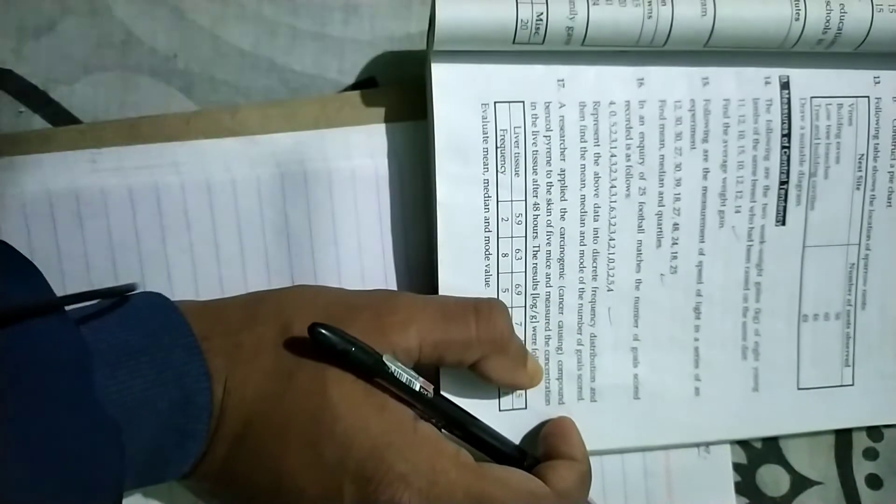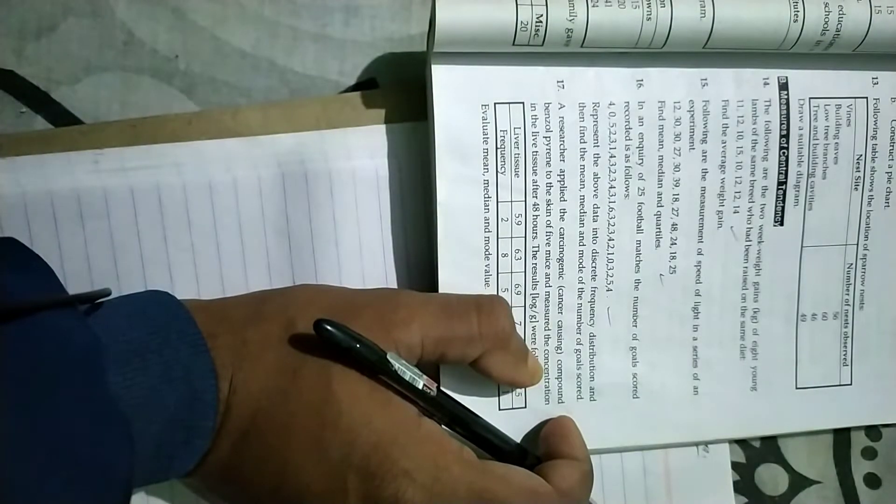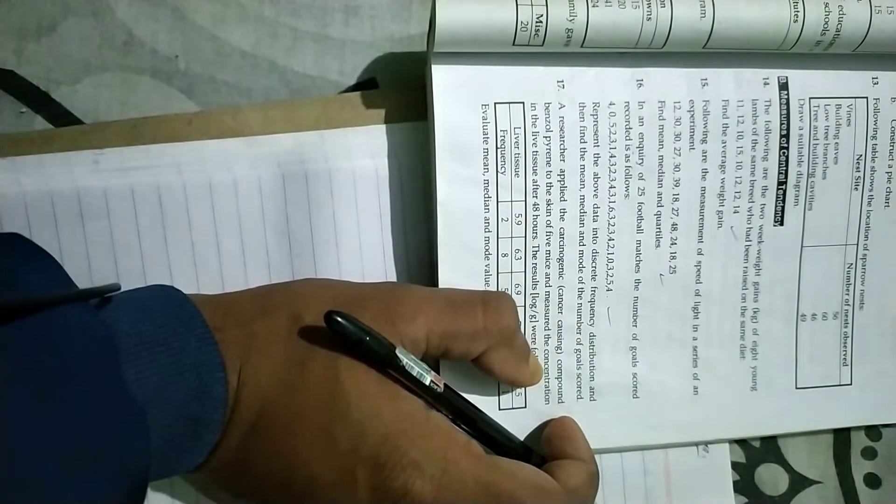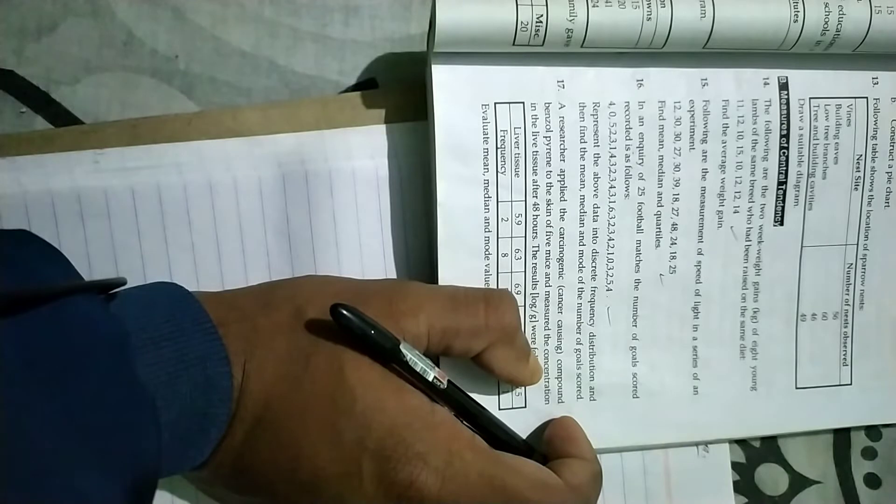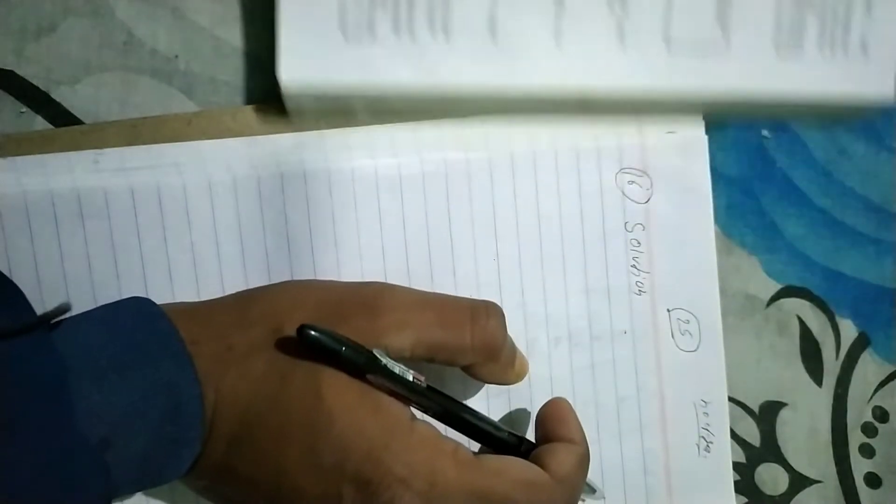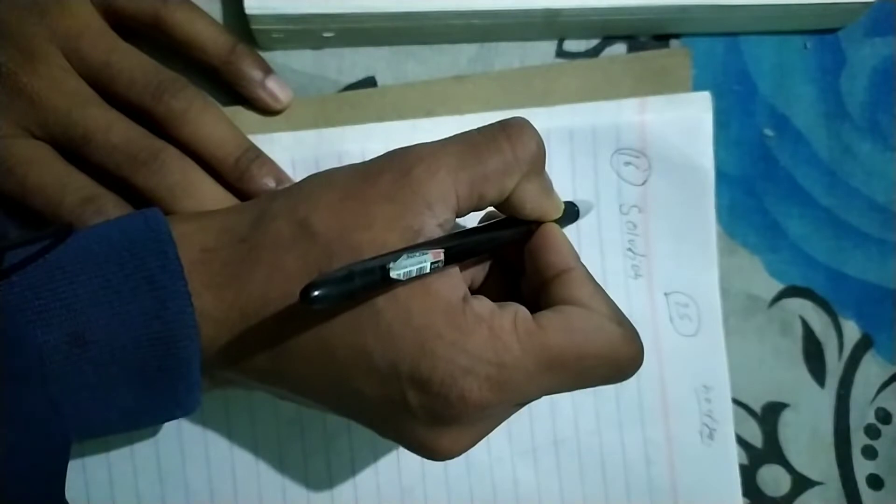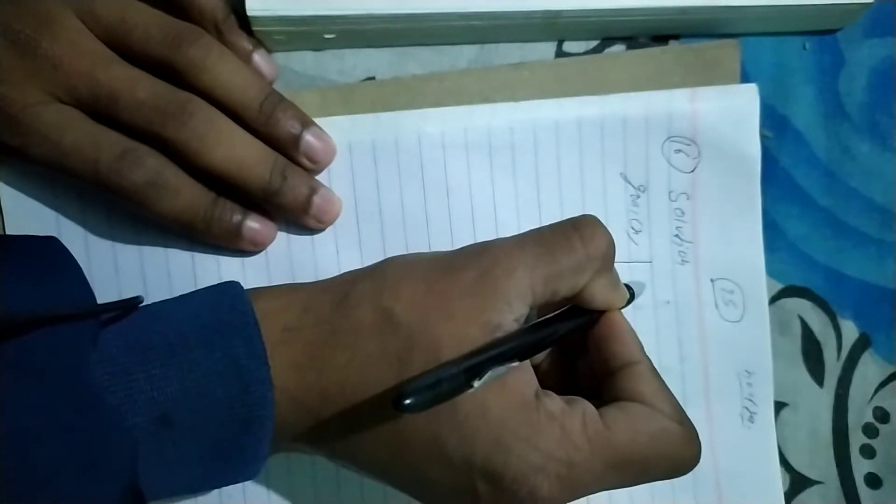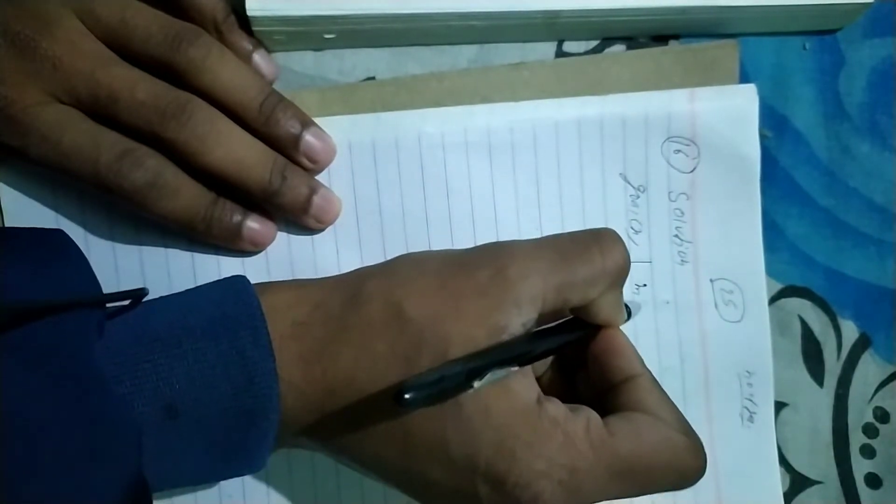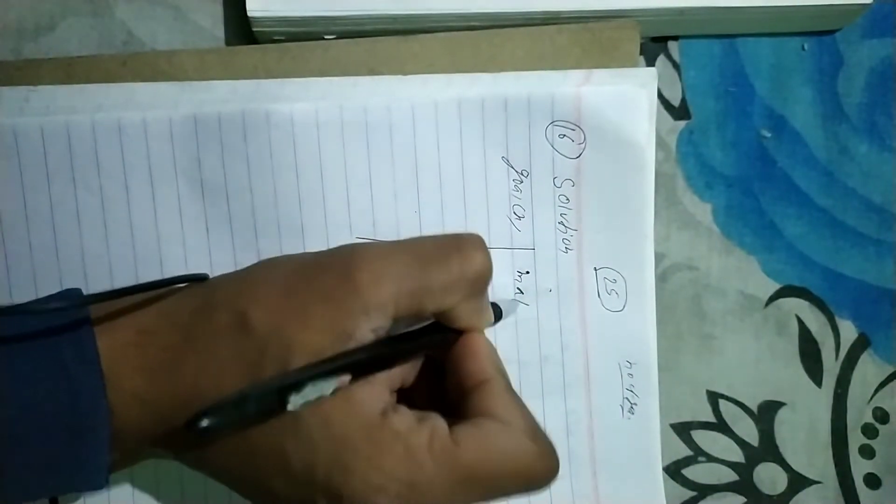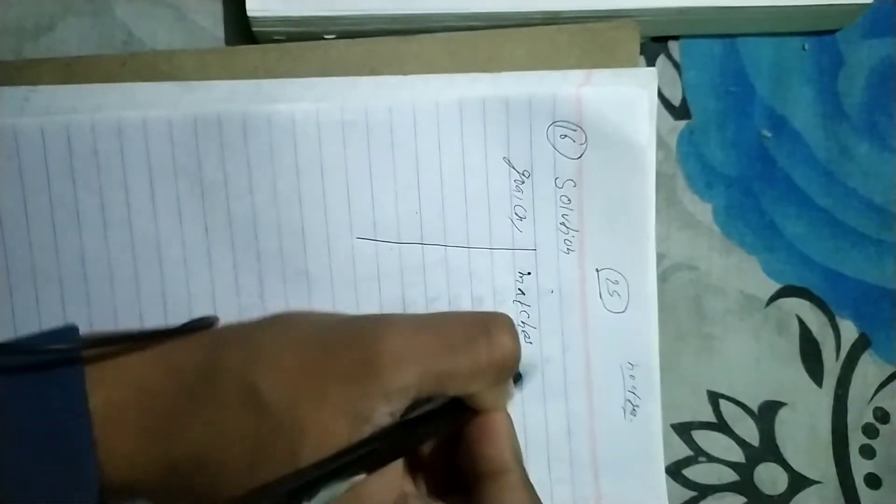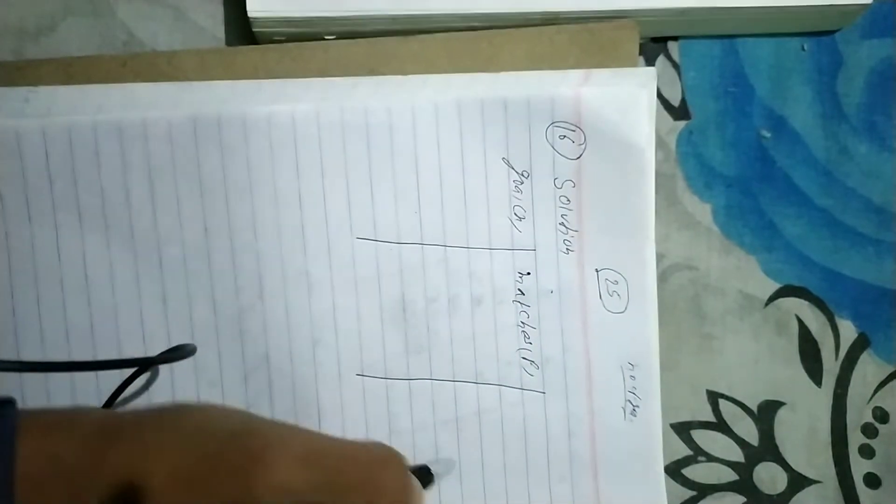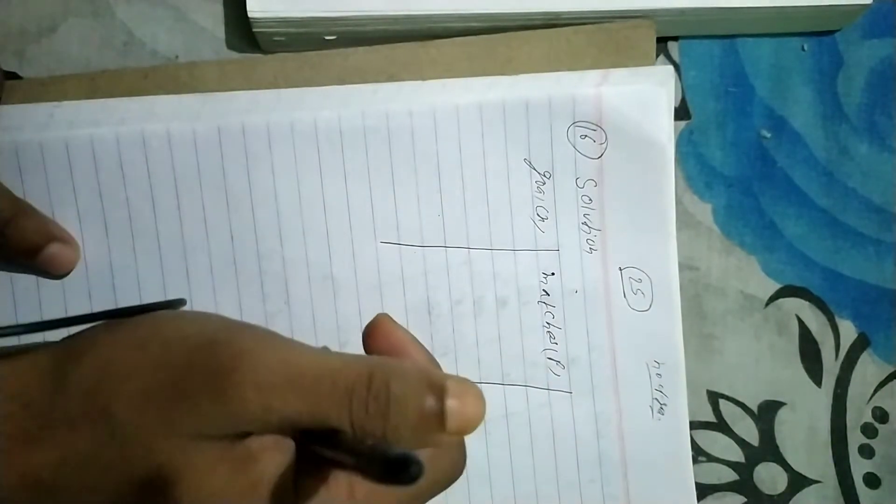The question asks us to represent the above data into discrete frequency distribution. We have to find the frequency and then find the mean. First of all, we have to convert the given individual data into discrete form - goals versus matches, with frequency.